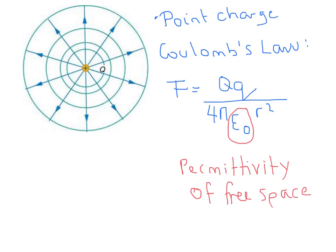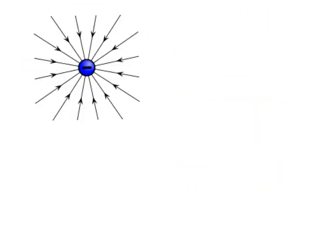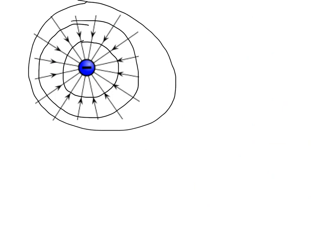Now I'm going to look at a negative field. A key thing to point out here: the field lines are pointing towards the negative charge, as highlighted earlier. We still have our potential lines going around it — these are just an approximate sketch. We always test with a positive charge, and obviously a positive charge is going to be attracted to a negative charge, so all of these potential lines are going to be negative.